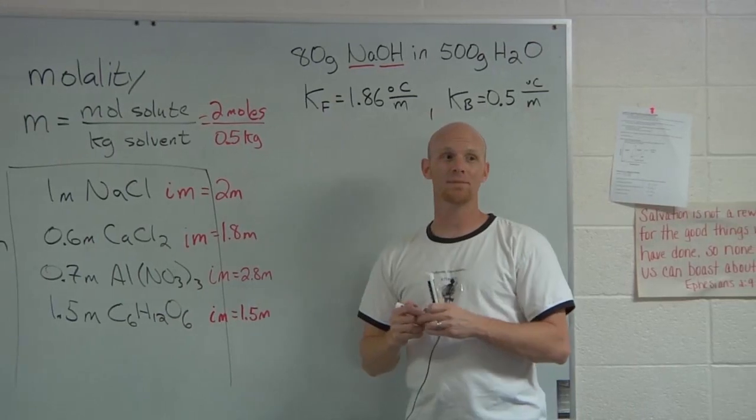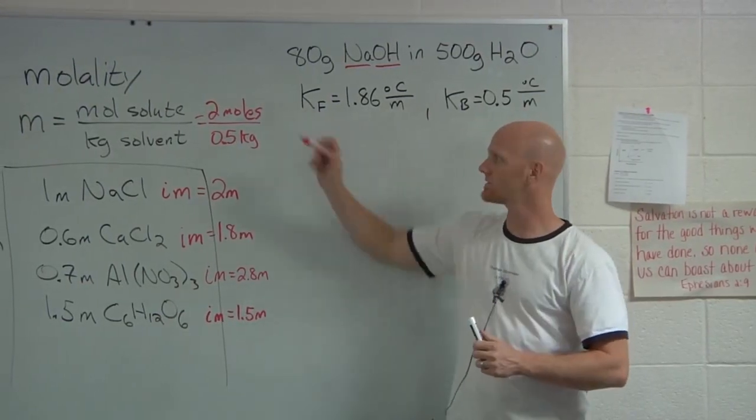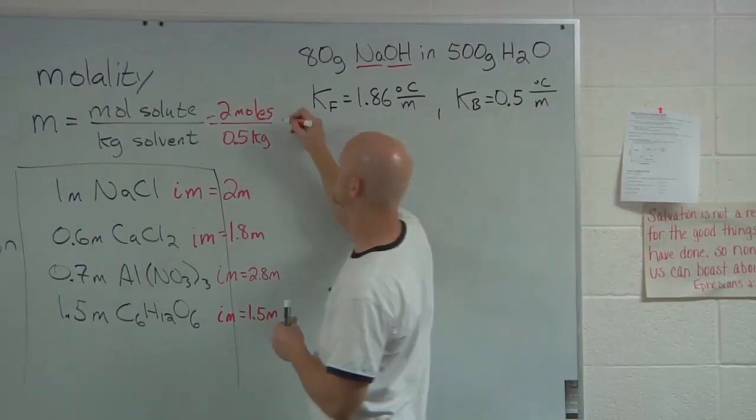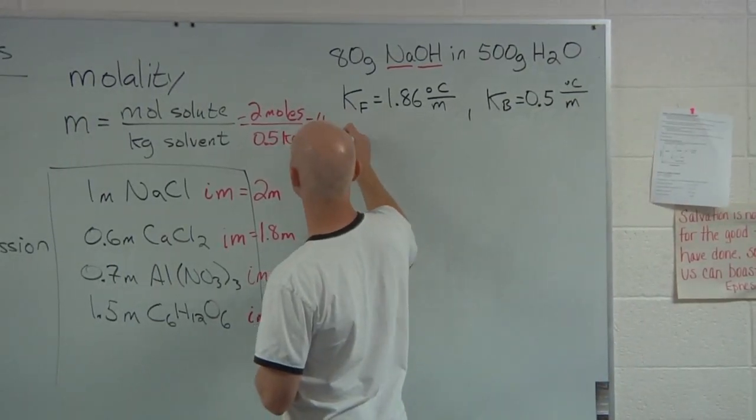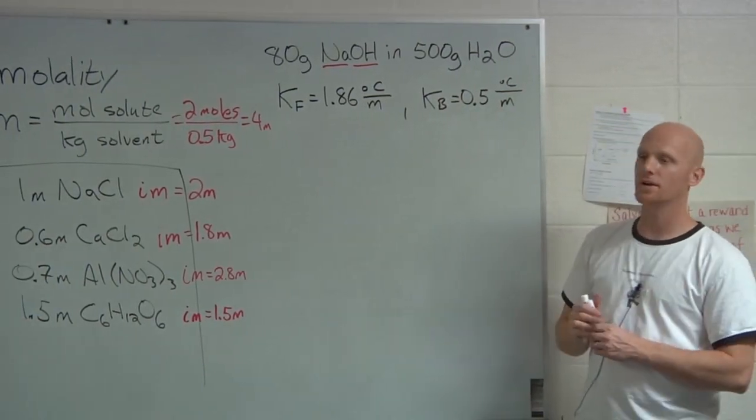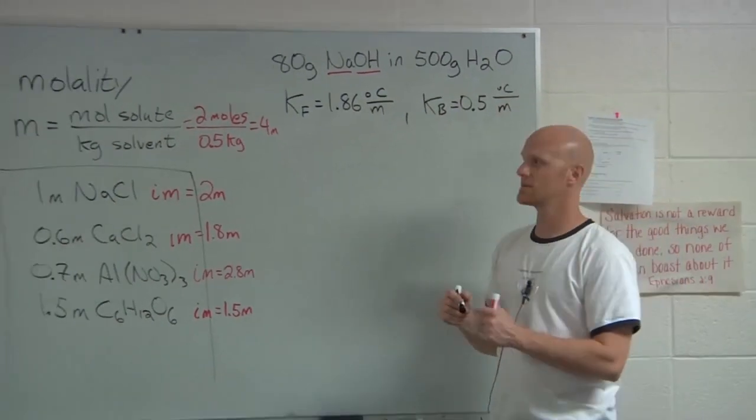And so what is our molality in this case? What's 2 over 0.5? That's 4 molal solution. And now we've got everything we need to actually do our plug-in and chug here for the freezing point.